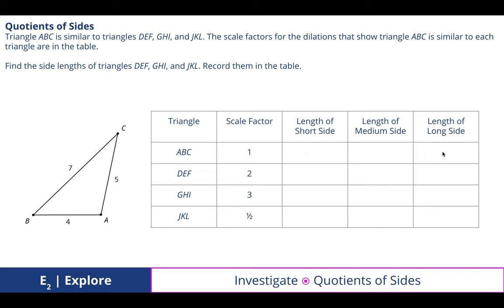We multiplied these original lengths by the scale factor to get DEF. So if the length of the short side was 4, then the length of the short side for DEF is 4 times 2, which is 8, and we filled the rest of this out. But then we took those numbers and started to compare the ratios to their corresponding sides.